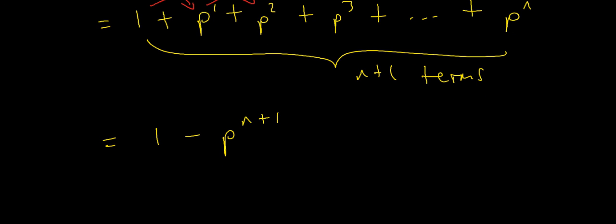All divided by 1 minus p. I can put this in a slightly different form by multiplying top and bottom by negative 1 to get p to the n plus 1 minus 1, all divided by p minus 1.